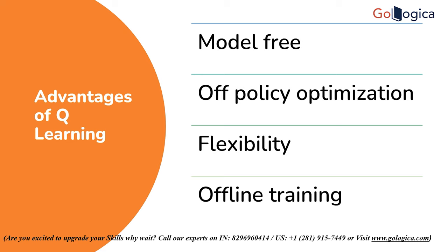Now let's see what are the advantages of Q-Learning. There are various potential benefits associated with the Q-Learning approach to reinforcement learning. One of Q-Learning's main potential benefits is its model-free methodology. The environment can be learned by the Q-Learning agent while it trains, removing the need for prior knowledge of it. Situations where the underlying dynamics of an environment are hard to predict or unknown are specifically well-suited for the model-free method.